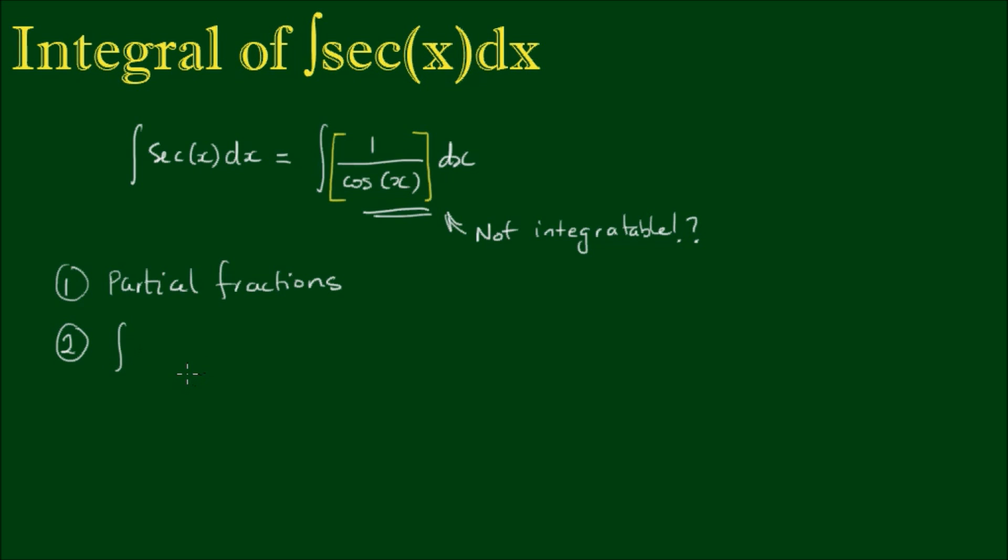It requires converting this integral into the form of f prime x over f, and the result is going to be the log of the function. So basically the second method is to use a u-substitution. Let's take a look at the method of partial fractions.